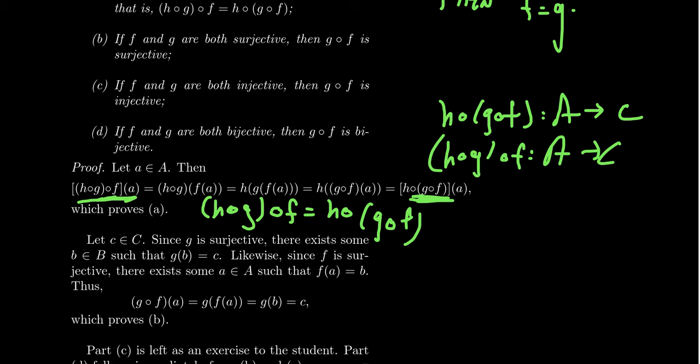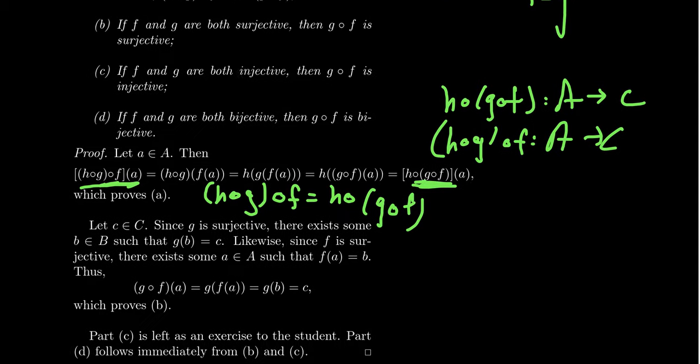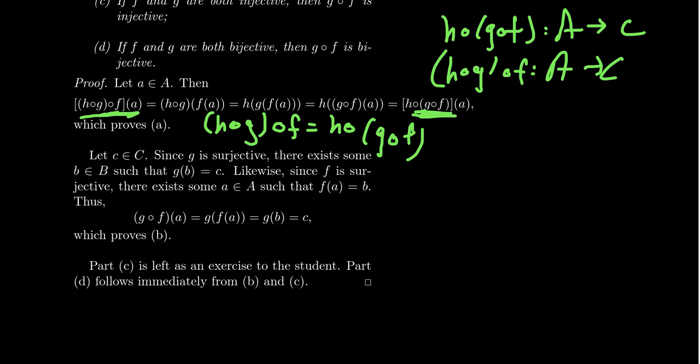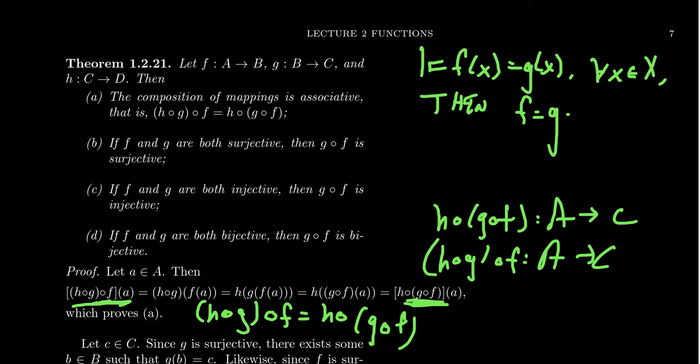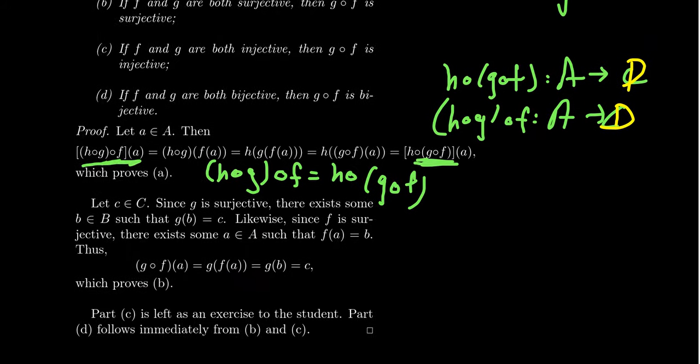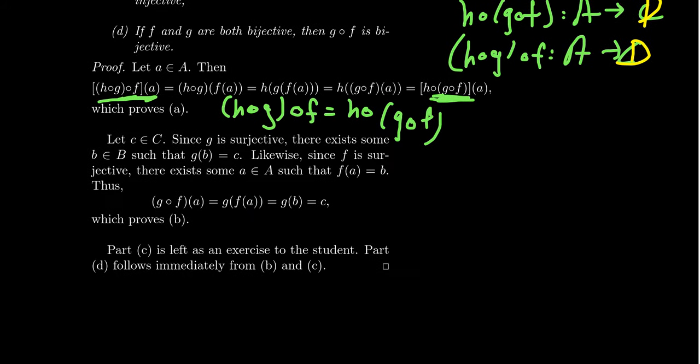So part B, let's prove that one together. If F and G are both surjective, then G of F is likewise surjective. Now to show that something is surjective, we have to take an arbitrary element in the codomain. Oh, I think I botched this earlier. The codomain of H was D. So these are functions from A to D. Sorry about that. So if you want to prove that a function is surjective, what you do is you're going to take a typical element, an arbitrary element of the codomain. So if you look at the function G of F, this is a function from A to C. And so we just take a typical element, an arbitrary element of C.